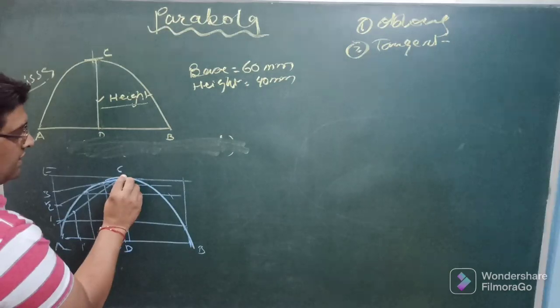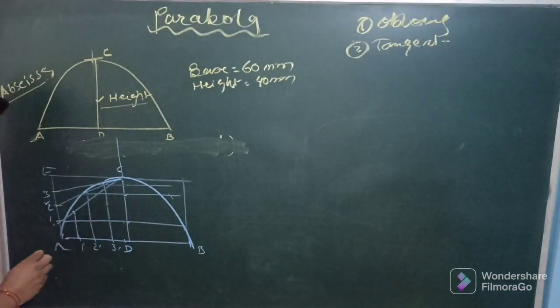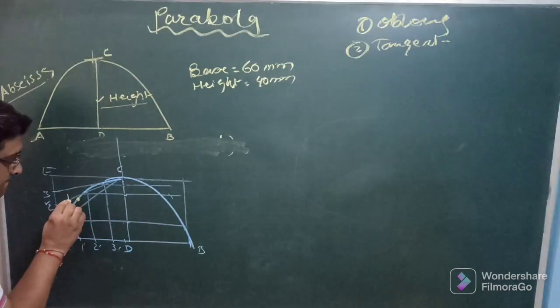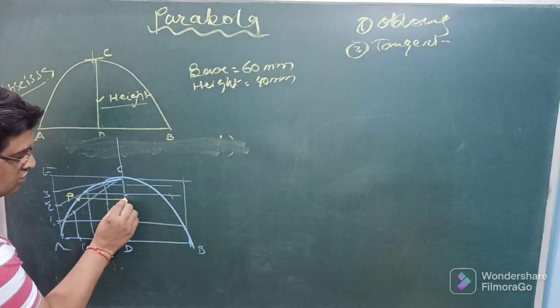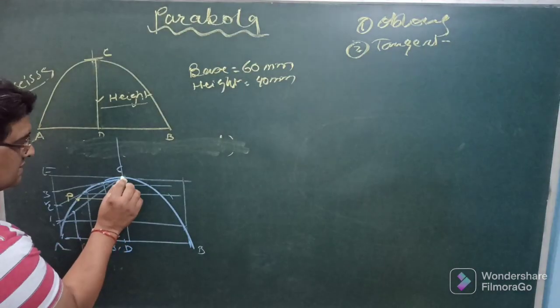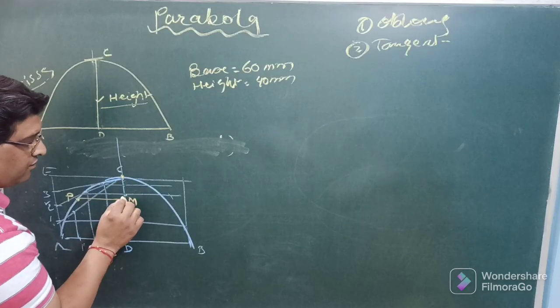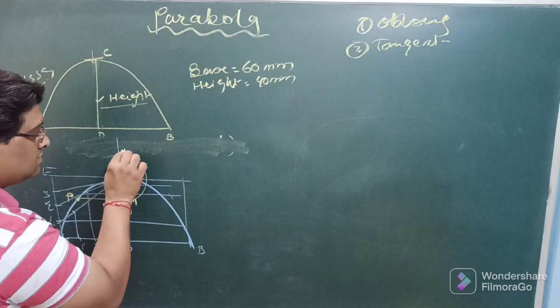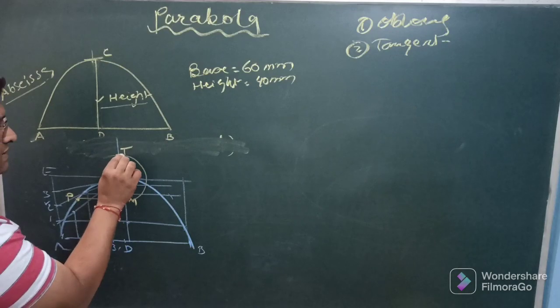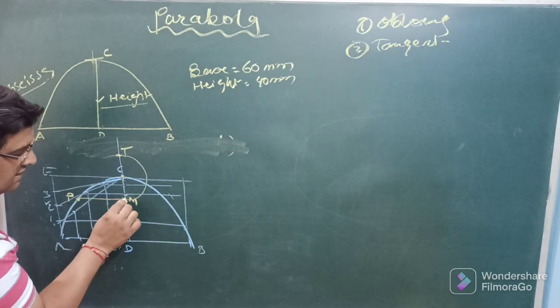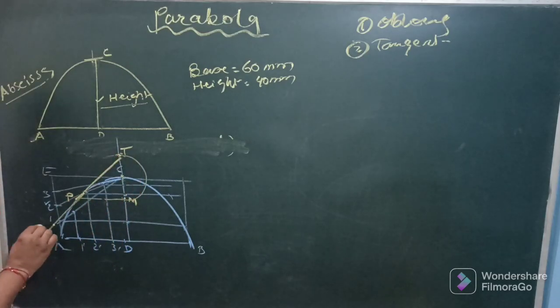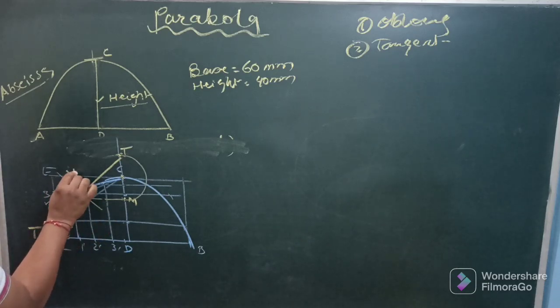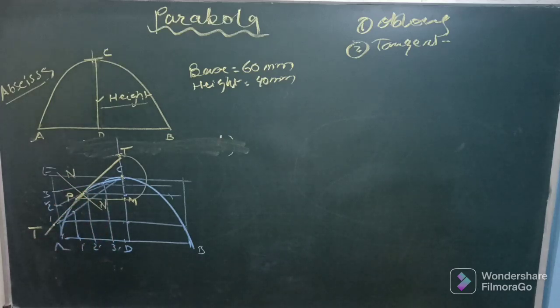Now to draw tangent and normal at any point, say for example, we wish to draw a tangent and normal at this point P. So what you need to do, draw a line parallel to the base from P so as to cut, say this is point M, then take C as center and radius equal to CM and cut this side so as to cut the extended CD line at point T. Join this T with P, that will be the tangent and a perpendicular here on P point will provide you the normal.